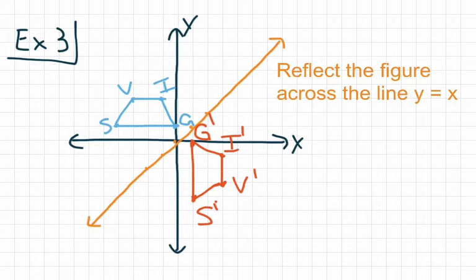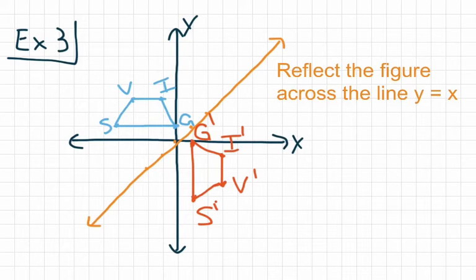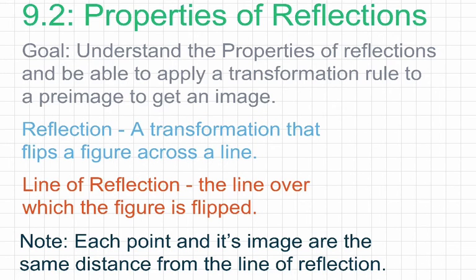If that example was a bit confusing, that's okay — I don't think you'll encounter problems like that on MyHRW. Still good to have in the back of your mind for when you get to transformations next year. So that's a quick look at Lesson 9.2 on the properties of reflections. Hopefully you're now able to understand the properties of reflections and apply a transformation rule to a pre-image to get an image. Write down any questions and we can talk about them in class tomorrow.